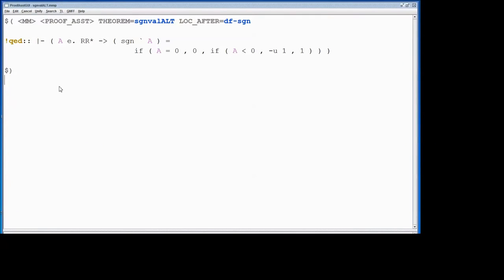Now, we've defined the mapping function for sgn, but usually we use functions like this through function application. In set.mm, that's the back quote operation, which is an infix operation. And so we need to prove that the application of the function means what we would think it would mean in cases where we have the right domain.